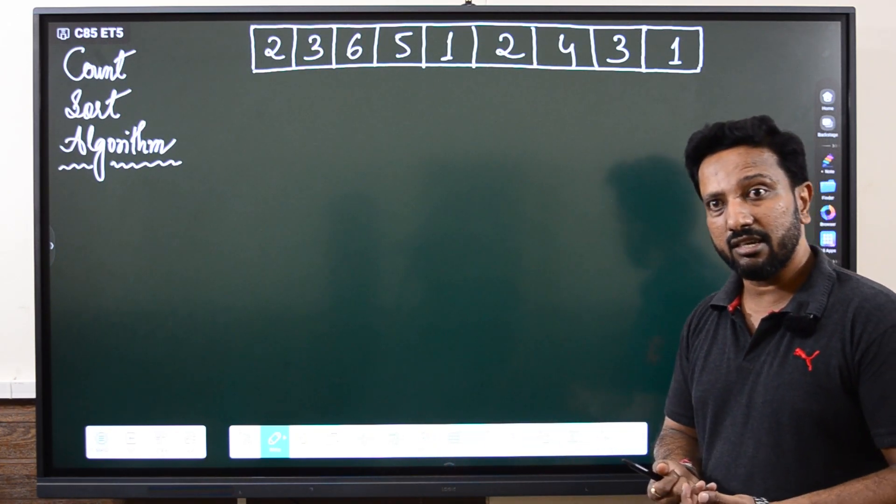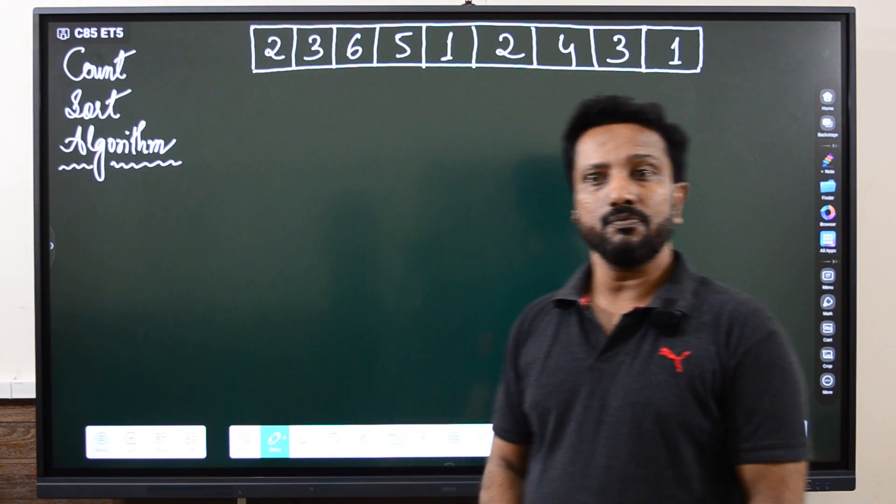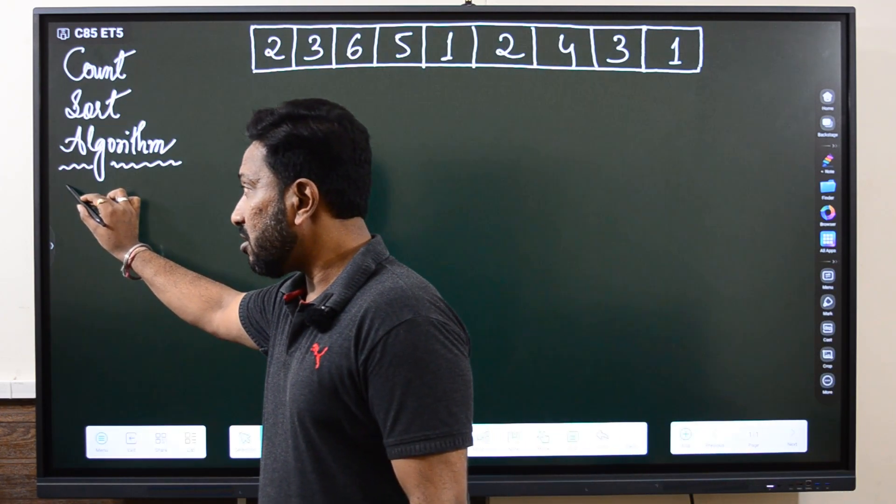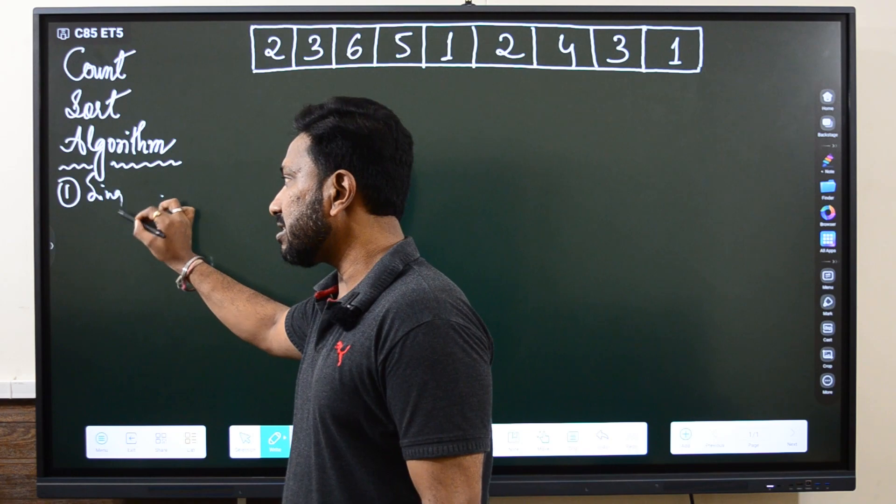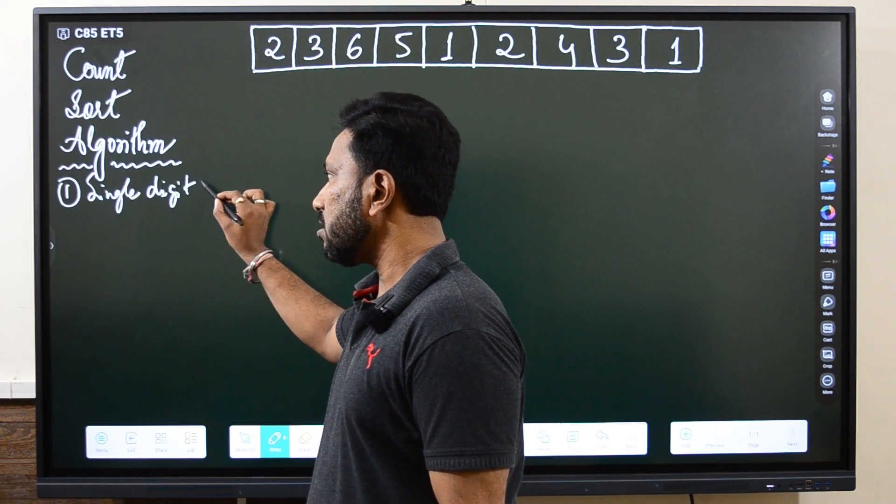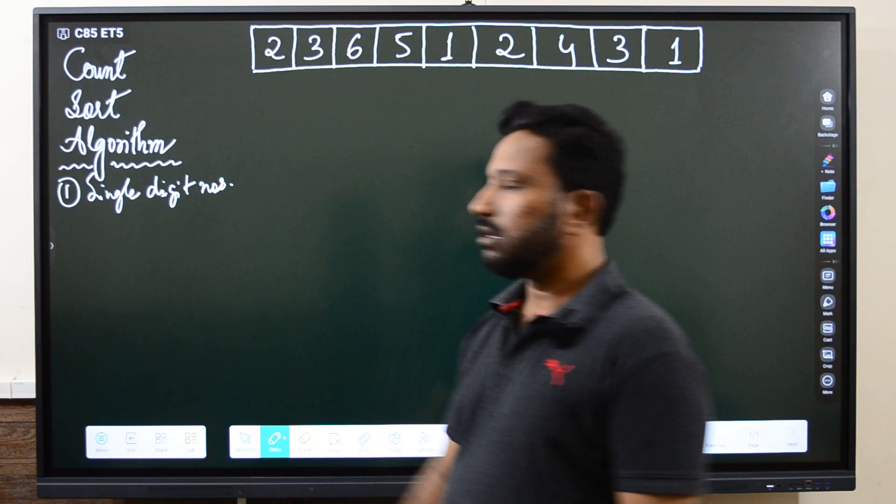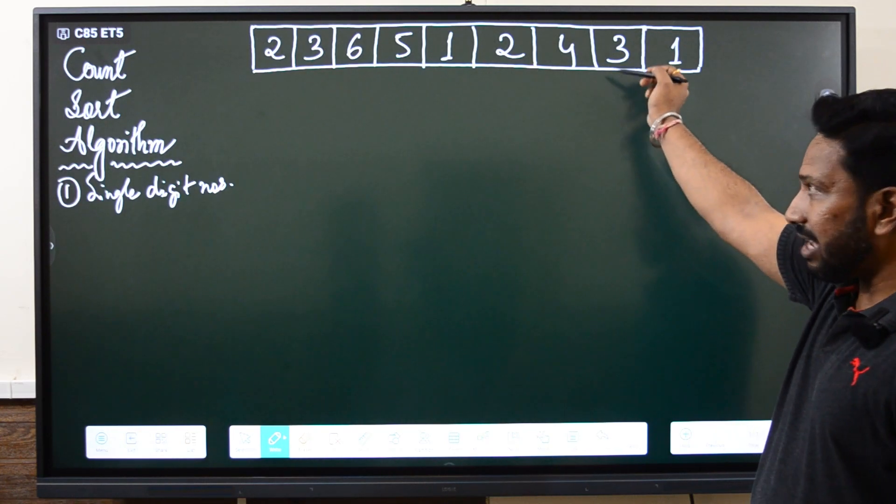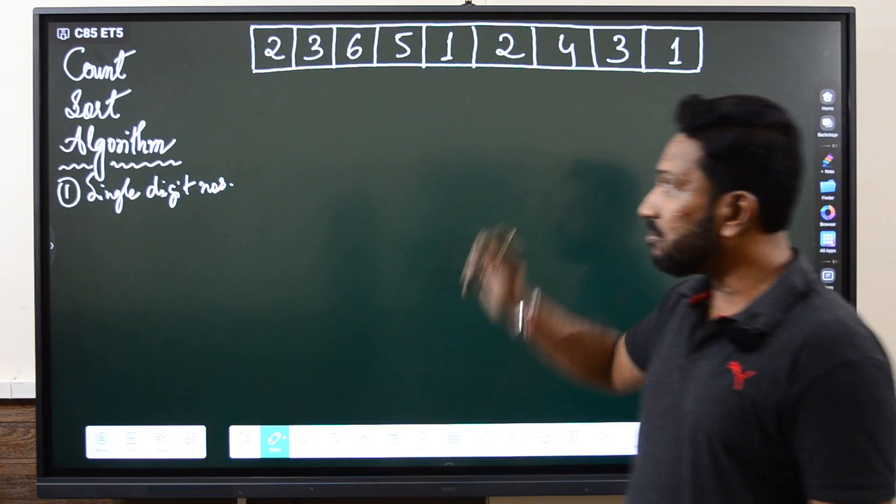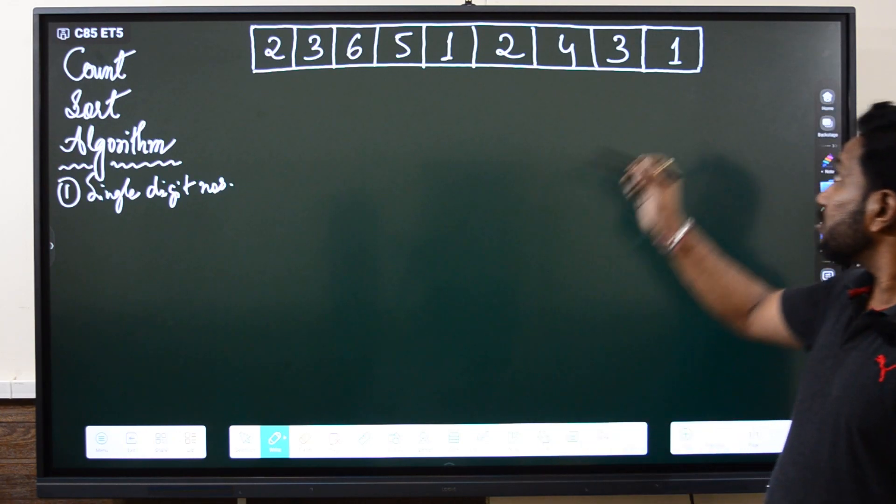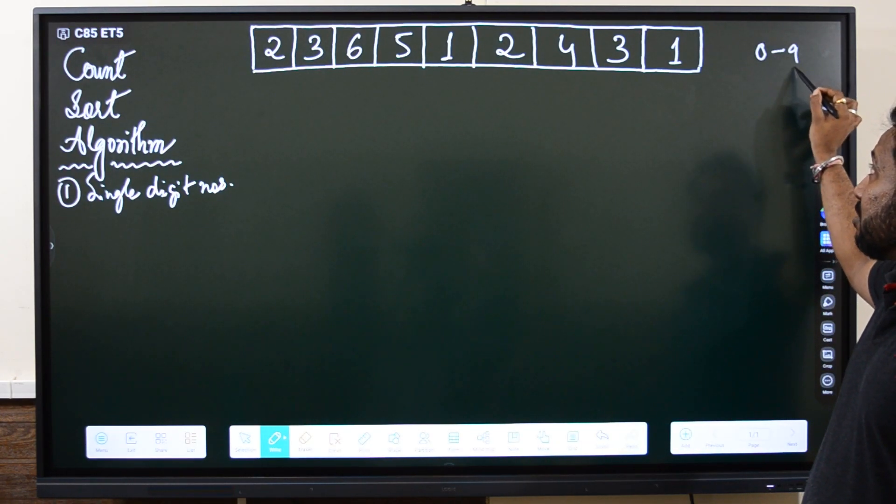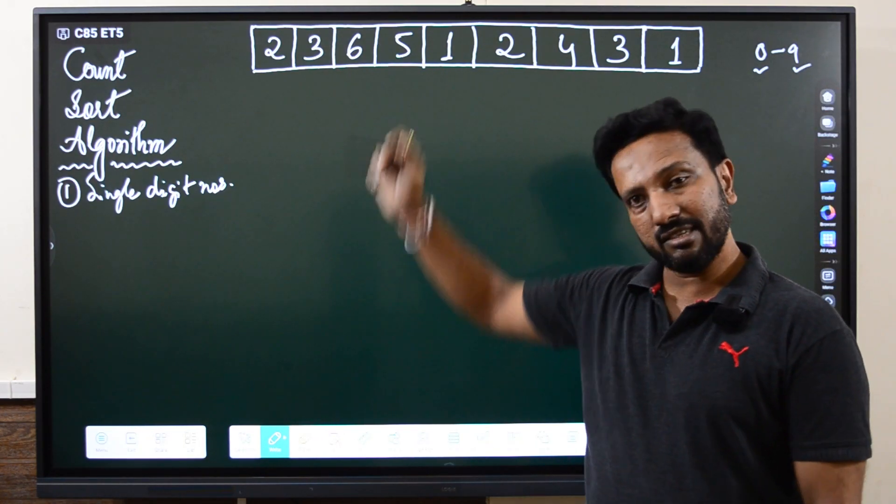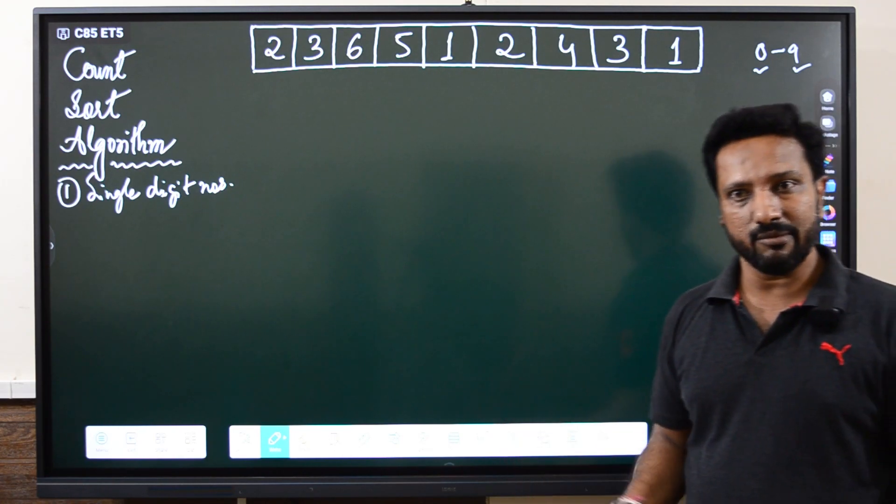So let's get started. Today's topic is the Count Sort Algorithm. The first thing is it is used for single digit numbers. I have taken a simple array having single digit numbers from 0 to 9, any digit. In my example you can see 6 is the maximum value, it can be 9 also in any other example.